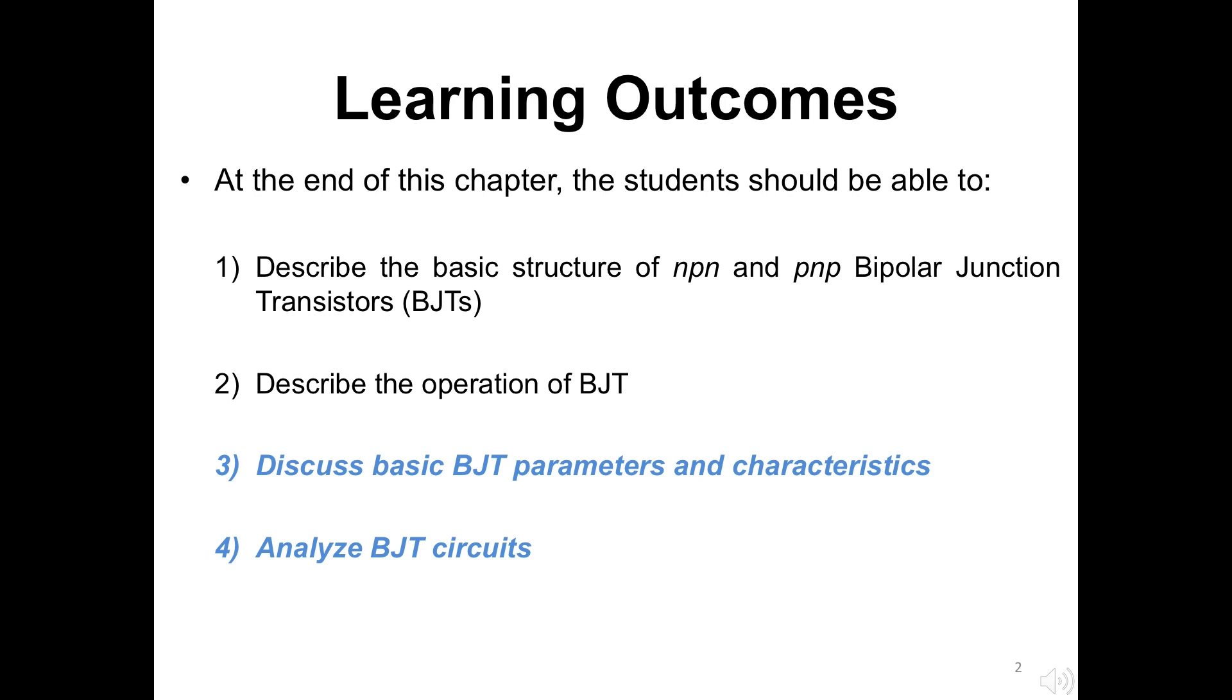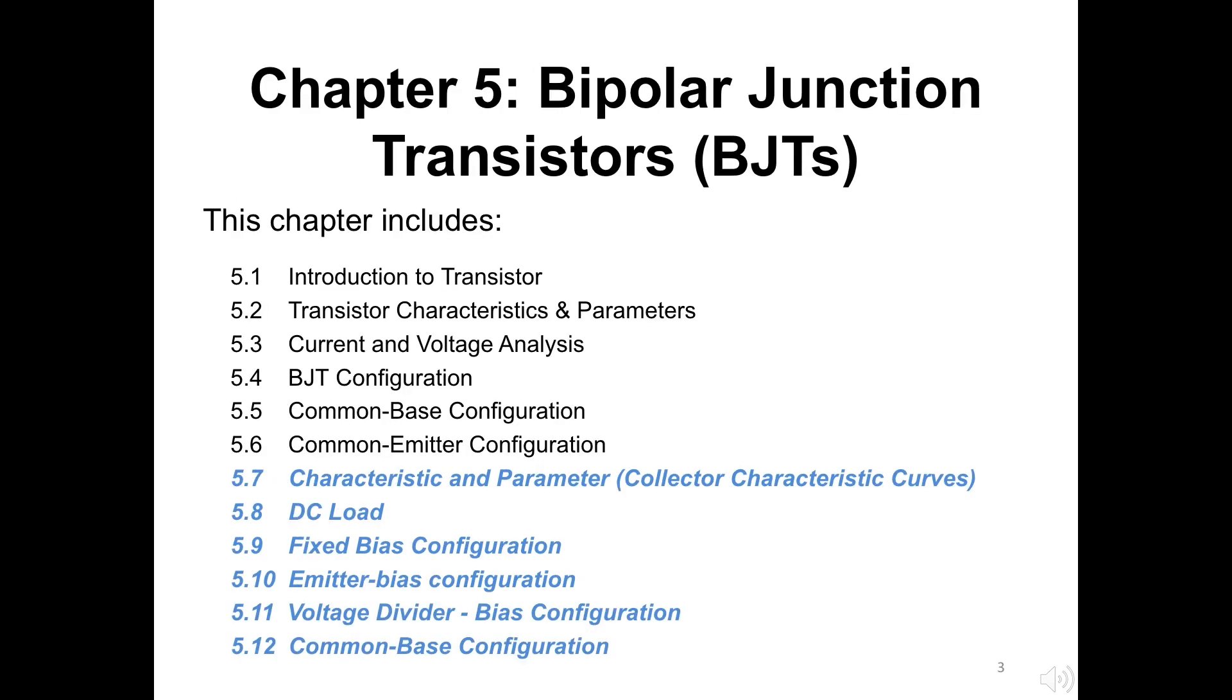Let us begin the lecture. As usual, I will start my slide by listing down the learning outcome for Chapter 5. For this lecture session, there will be two outcomes. Today all the students require to be able to discuss basic BJT parameters and its characteristic, and secondly, students need to analyze the BJT circuit with any given condition and parameters.